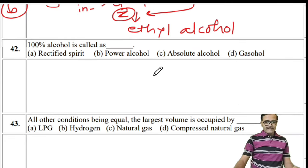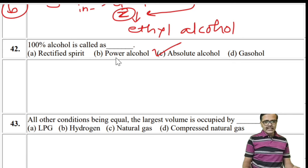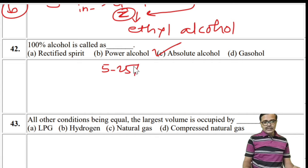100% alcohol is called absolute alcohol — not power alcohol. Power alcohol is a mixture where 5 to 25% ethyl alcohol is present in petrol. So the answer is C: absolute alcohol.